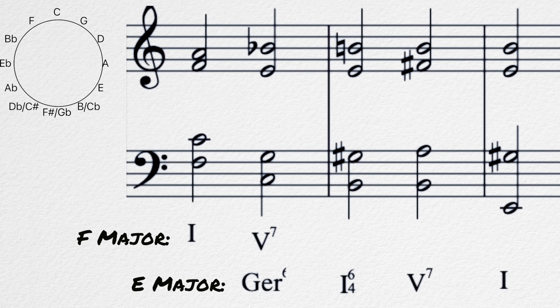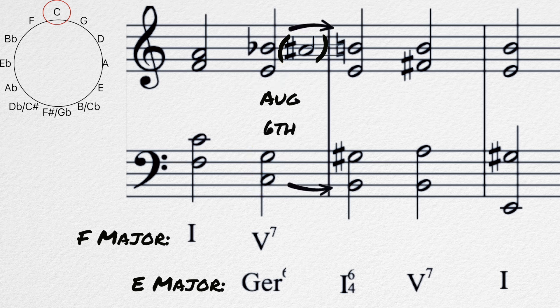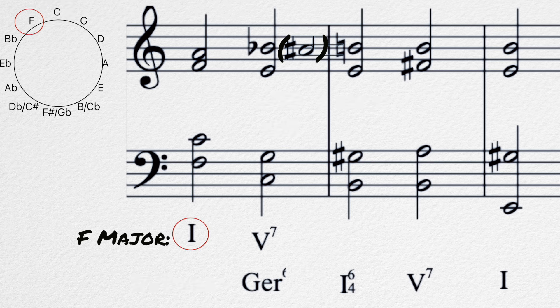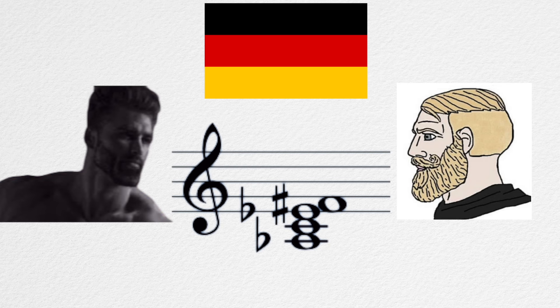For example, in the key of F we move to the dominant seventh — C7: C, E, G, B flat. This can be re-spelled as C, E, G, A sharp, which would be the German augmented sixth in the key of E major. The C and A sharp form the augmented sixth, both expanding outward to B, and then following the typical resolution process. So with the German augmented sixth, we can modulate up or down a half step depending on how we use it.